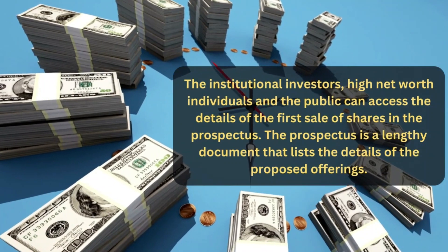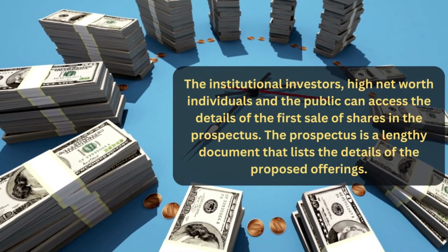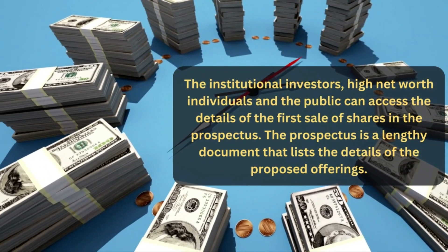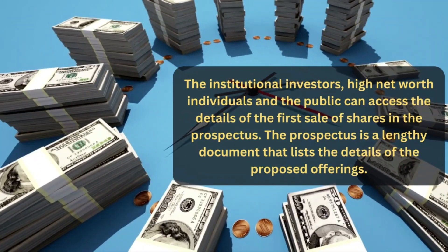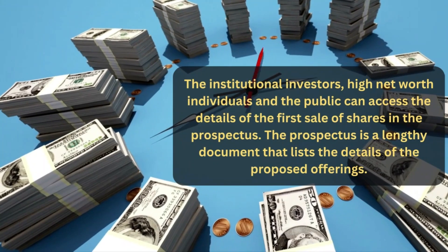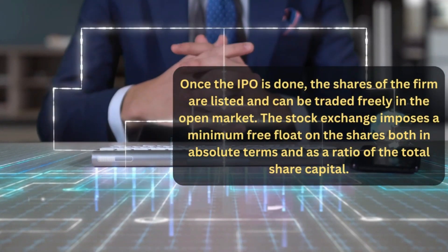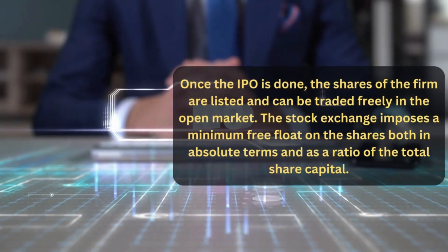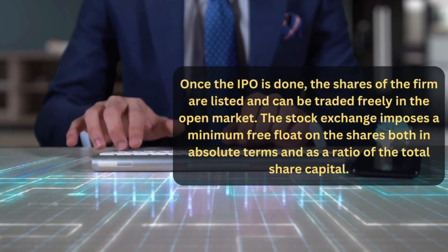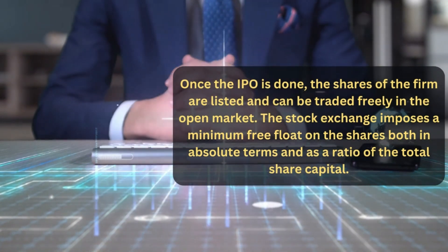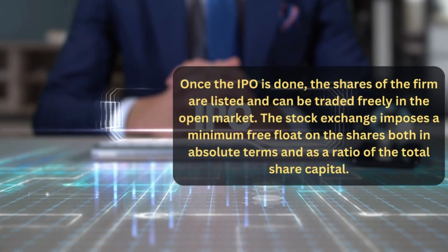The institutional investors, high net worth individuals, and the public can access the details of the first sale of shares in the prospectus. The prospectus is a lengthy document that lists the details of the proposed offerings. Once the IPO is done, the shares of the firm are listed and can be traded freely in the open market. The stock exchange imposes a minimum free float on the shares both in absolute terms and as a ratio of the total share capital.